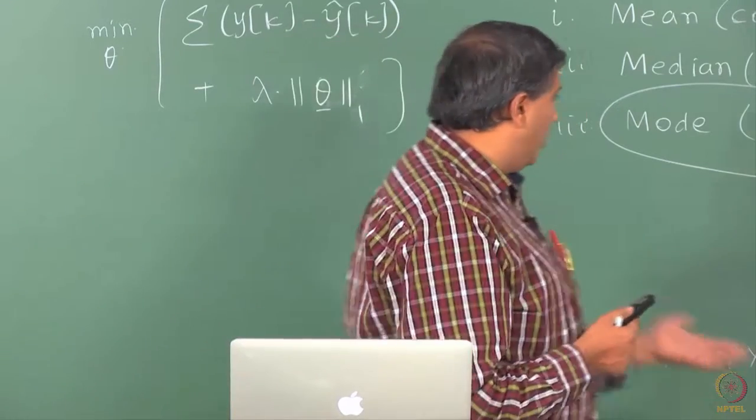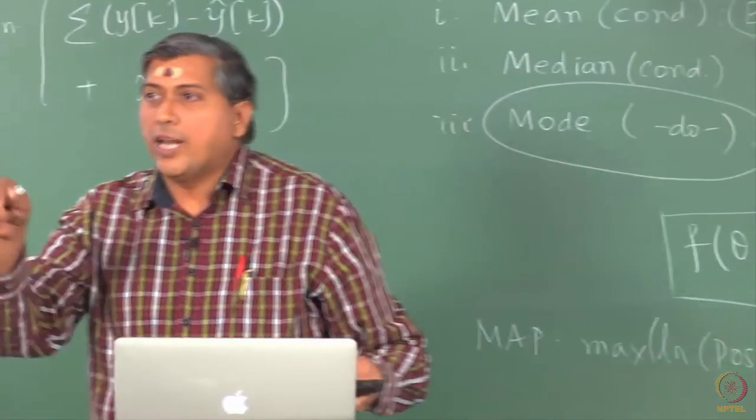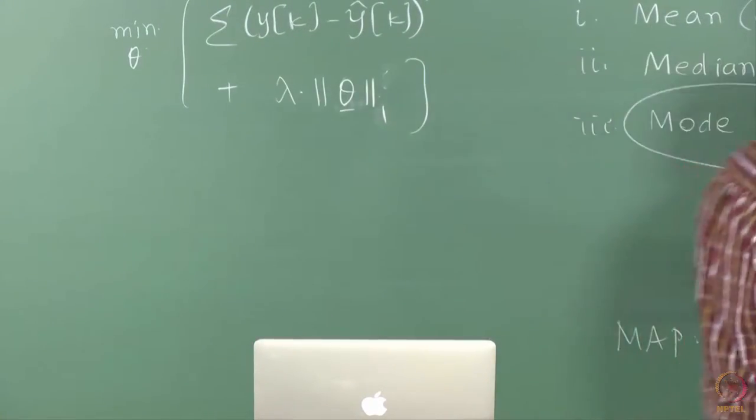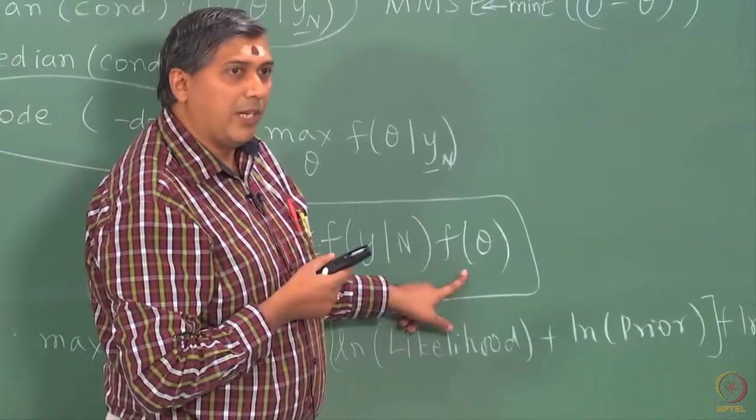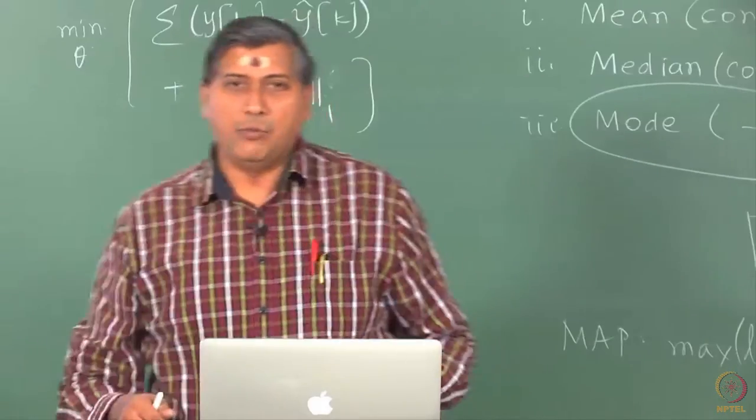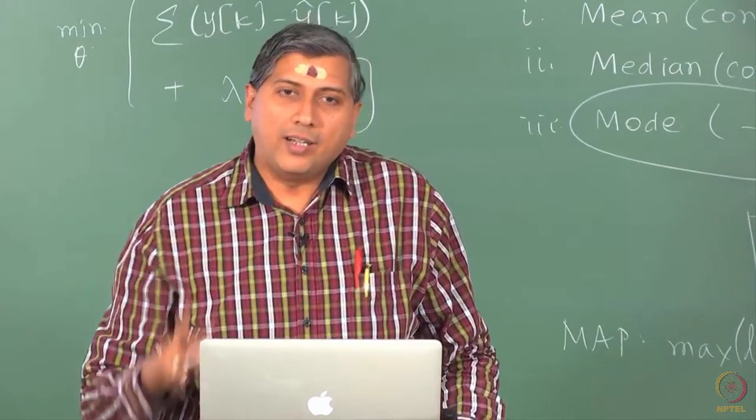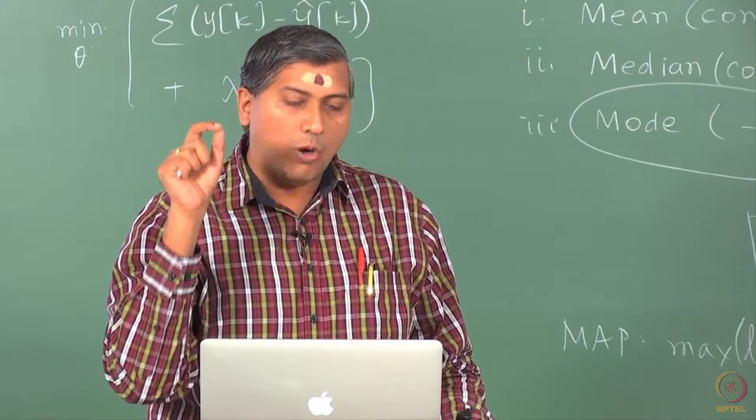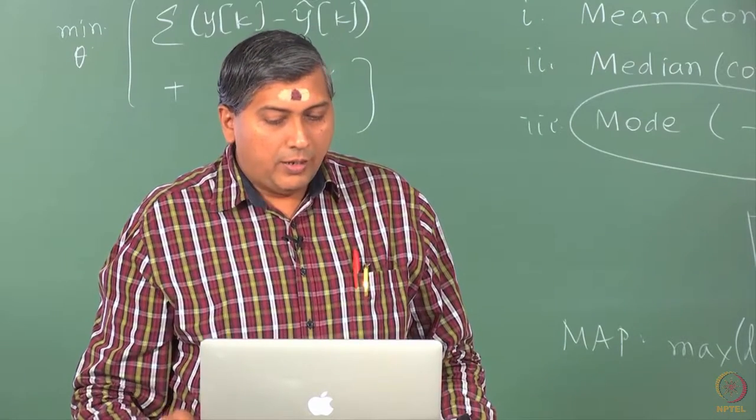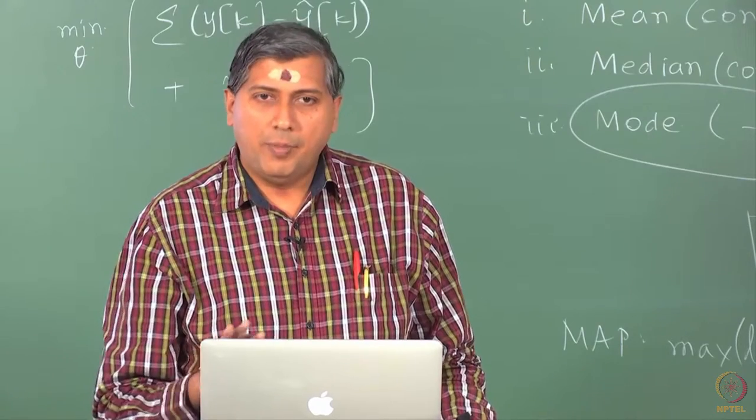If you choose such a prior, then you can show that working with MAP is equivalent to working with a regularized MLE with one norm penalty function. Again, if F of theta is e to the minus mod something, theta minus something, then when you take the logarithm it will essentially amount to working with one norm. So, these equivalences are excellent, really very good because you then know what problem you are essentially working with.